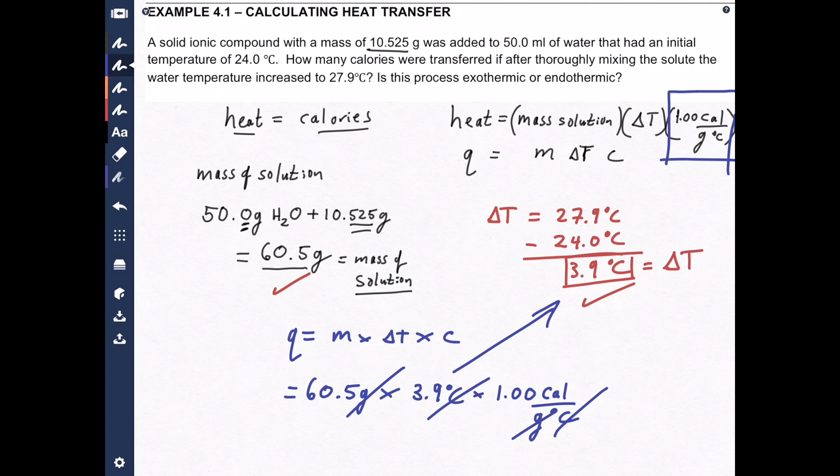And now we're left with the unit we do want. Grab out your calculator. Let me fire mine up here using my phone calculator. 60.5 multiplied by 3.9, equals. One more time, calculator messed up.